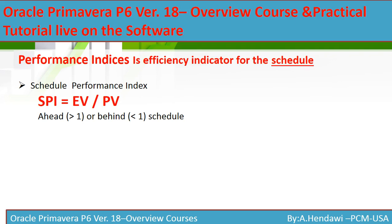Performance indices are efficiency indicators for the schedule. High-level stakeholders like a chairman look only at the key performance indices in high-level reports — they don't check the WBS or activity details, which are left to the project manager and team. Schedule Performance Index (SPI) equals Earned Value over Planned Value. If it is more than one, you are ahead of schedule — what you earned is more than what you planned.